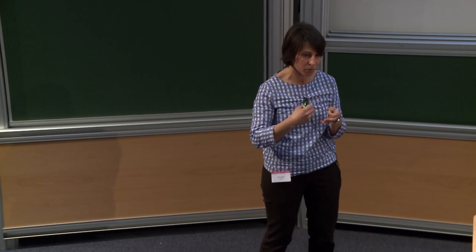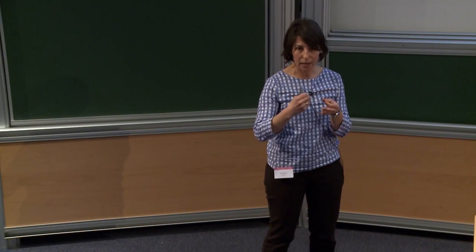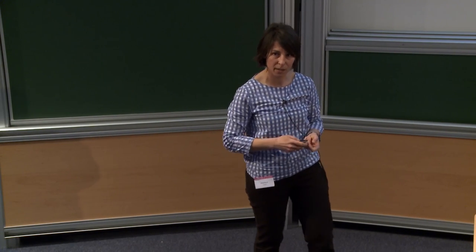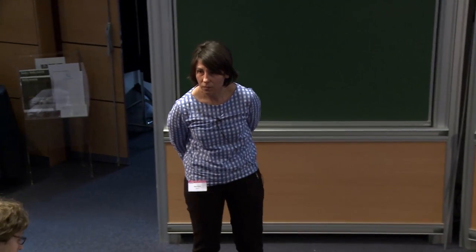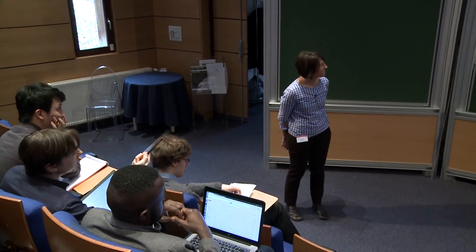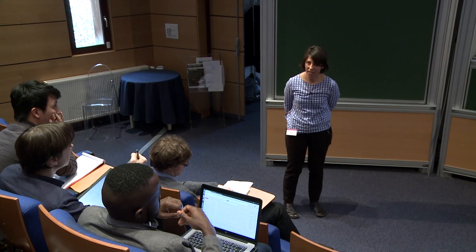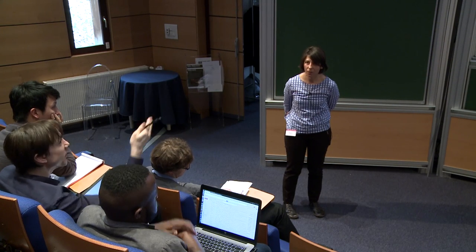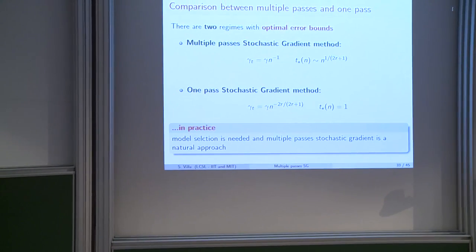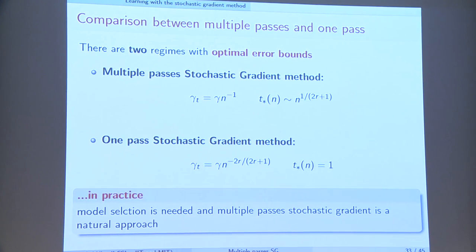One last comparison: gradient descent on the empirical risk with early stopping also works, and from both computational and statistical points of view there is apparently no difference between multiple-pass SGD and full gradient descent. One pass of incremental gradient is equivalent to one full gradient pass, with the same stopping time and step size. What is still missing is capacity-dependent bounds, which seem feasible but haven't been obtained yet.